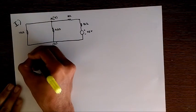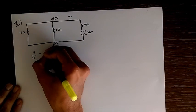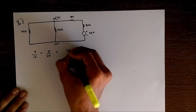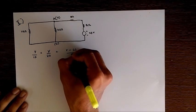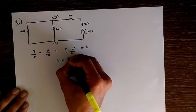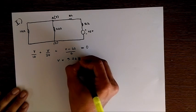Writing the node equation: V by 10 plus V by 20 plus V minus 20 by 7. Solving, I got the value of V as 9.76 volts.